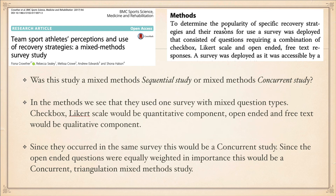Since these were done at the same time within the same survey, this was a concurrent study. And since the open-ended questions were equally weighted — researchers showed a lot of detail from both the qualitative and quantitative data — this would be classified as a triangulation mixed methods study conducted in a concurrent fashion.